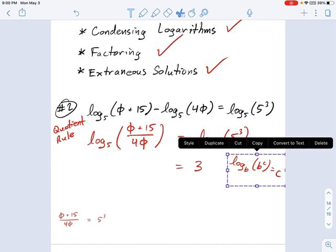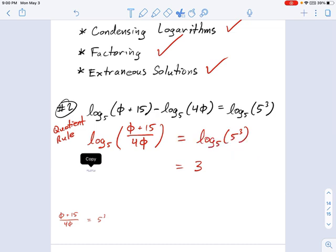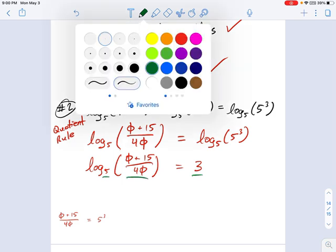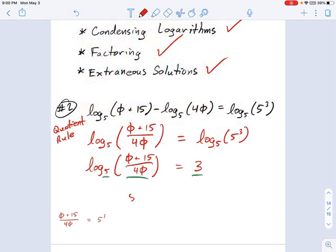So we've noticed that that is 3, and that's nice. Then we say log base 5 of this whole mess right here, (φ + 15) divided by 4φ, equals 3. Now you would convert it to exponential form. You say 5 to the 3 equals the argument. So in this case, it's going to be 5 cubed, 5 to the 3 equals the argument, (φ + 15) over 4φ.